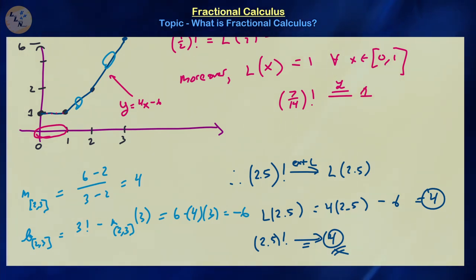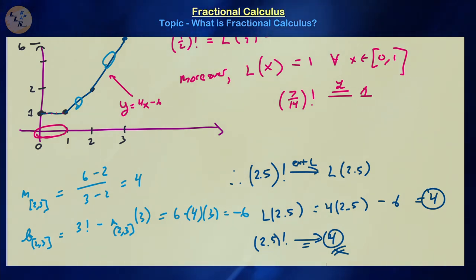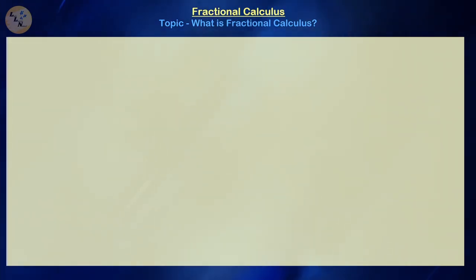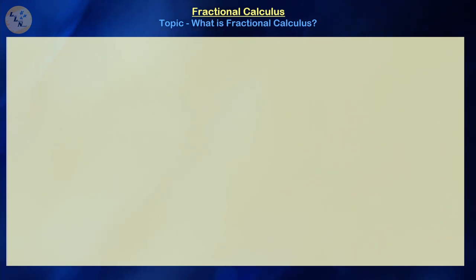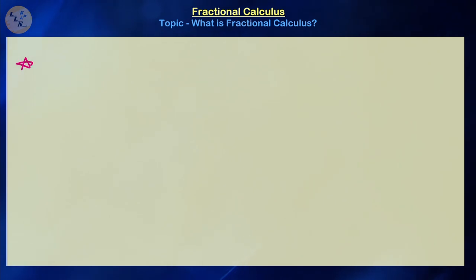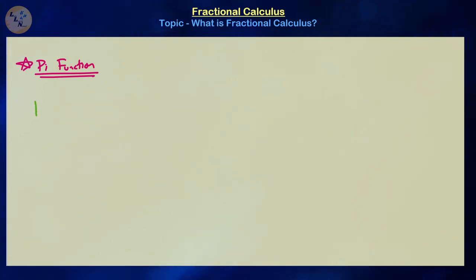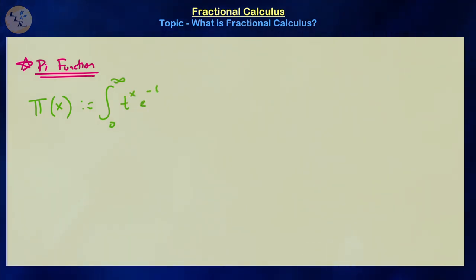There is one extrapolation of the factorial function that is quite popular and nicer compared to linear, quadratic, or cubic approaches: the pi function. The pi function, denoted pi of x, is defined as the integral from 0 to infinity of t to the power of x times e to the minus t dt. It is an integral-defined function.